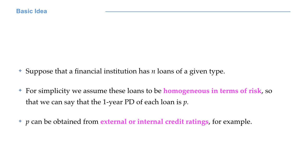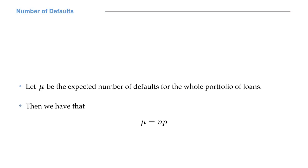For what concerns probability P, it can be naturally obtained from external or internal credit ratings depending on our preferences. Let mu be the expected number of defaults in our portfolio of loans. We naturally have that mu is equal to N times P.